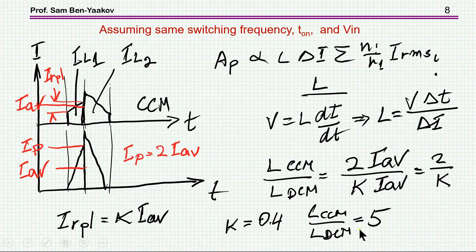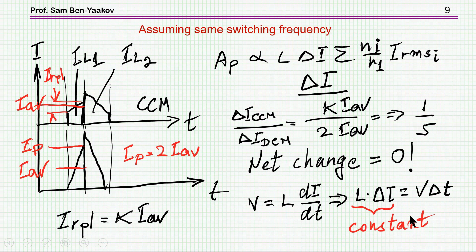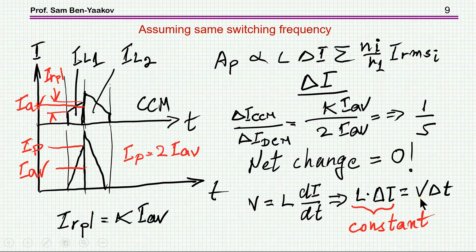Under these conditions, with the respective ΔI values, for the numerical example of k = 0.4, the CCM inductance is indeed larger than DCM by a factor of 5.4, so AP on this basis would be five times lower. However, when we look at ΔI for each case, we find that the DCM ΔI is much larger than CCM ΔI by the same factor — and the product L·ΔI is therefore the same in both cases. This is obvious from the state-space equation: L·ΔI = V·ΔT, and since we assume the same voltage and same T-on, this product is constant. So as far as AP goes, there is no net change between CCM and DCM on this basis.